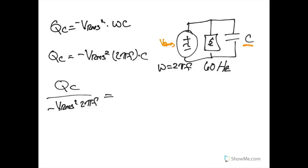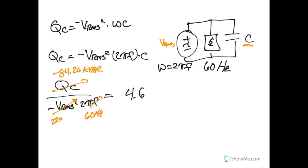Plugging in all final values: Qc was negative 84.26 kilovars, the voltage source is 220 volts RMS, and frequency is 60 hertz. After these calculations, we find we need a capacitor of 4.62 millifarads.